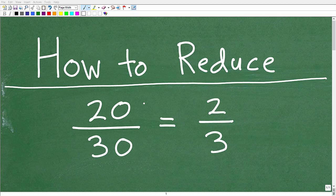Now here we have a fraction 20 over 30, and it's equivalent to the simpler fraction 2 thirds. So this fraction has been reduced to this fraction.